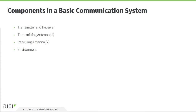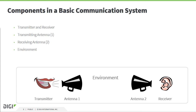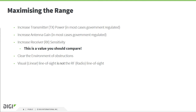In a basic communication system you will have a transmitter and receiver, and in the middle two antennas and also the air or the environment where the electromagnetic wave needs to travel through. The next question everybody wonders is: how can I maximize the range or coverage? The first thing you can do is increase the power in the transmitter, or try to increase the antenna gain on both sides, but normally this is limited by the government.